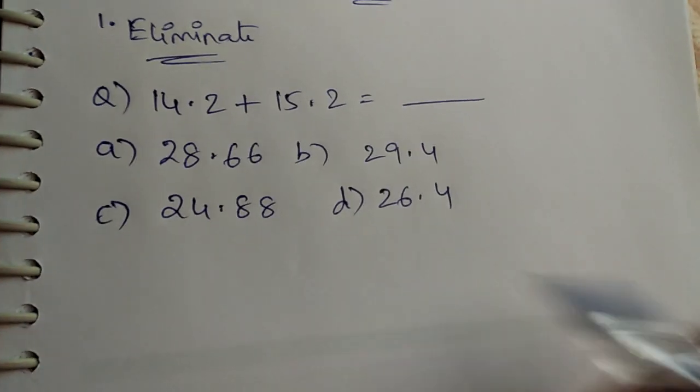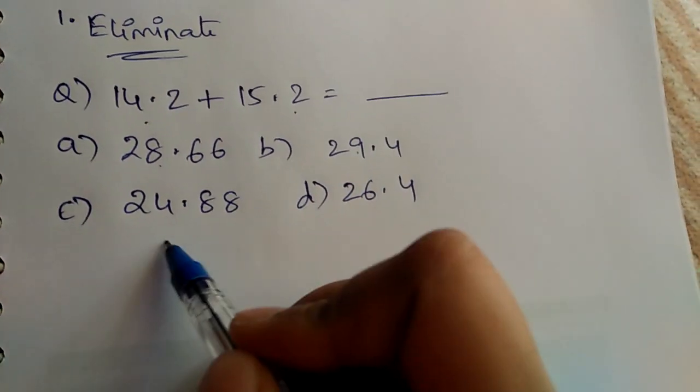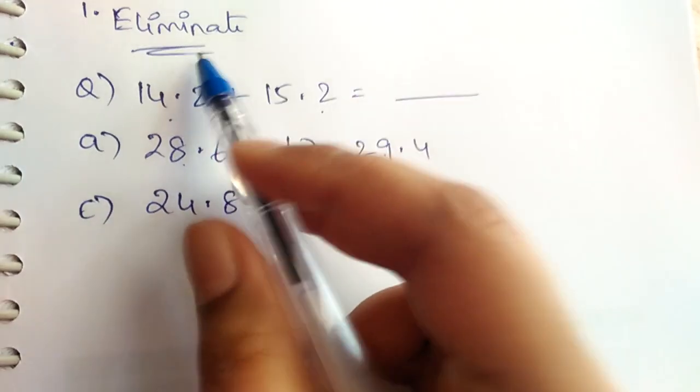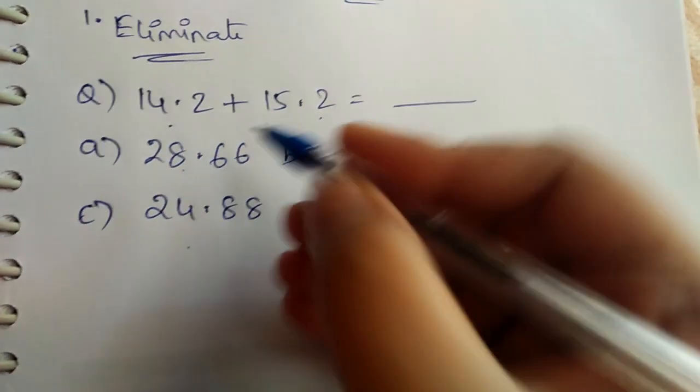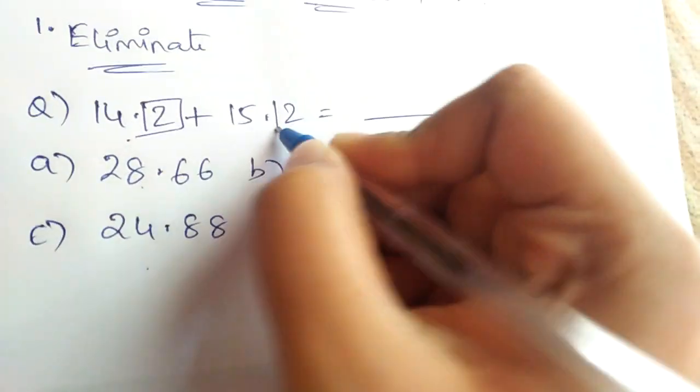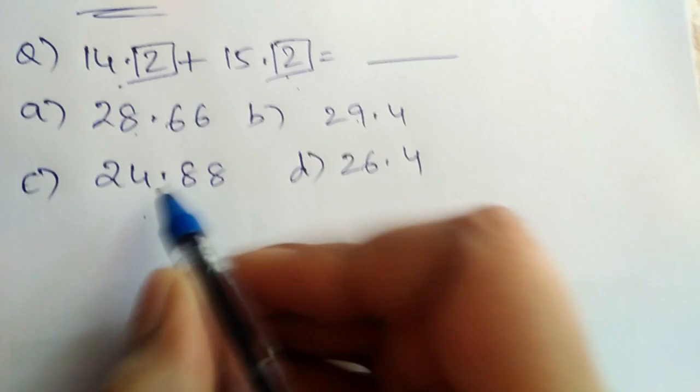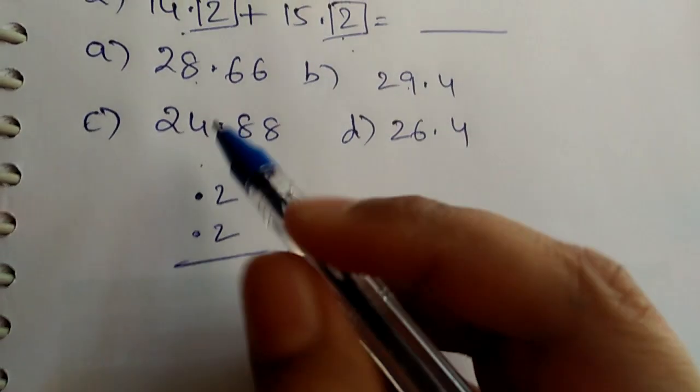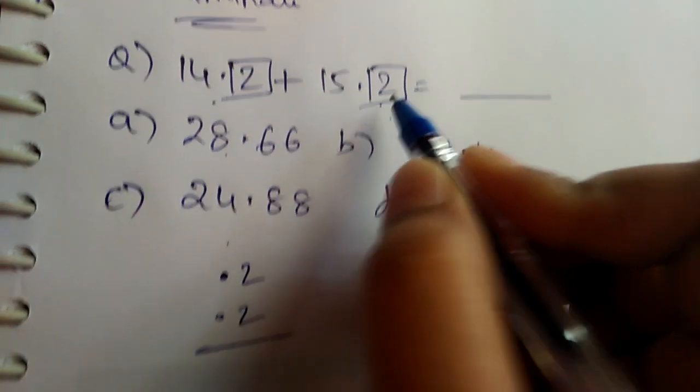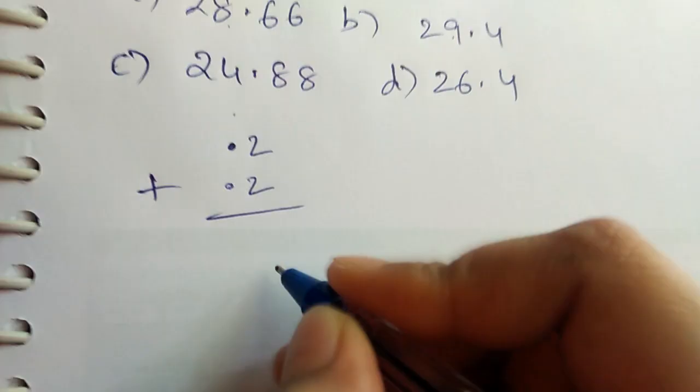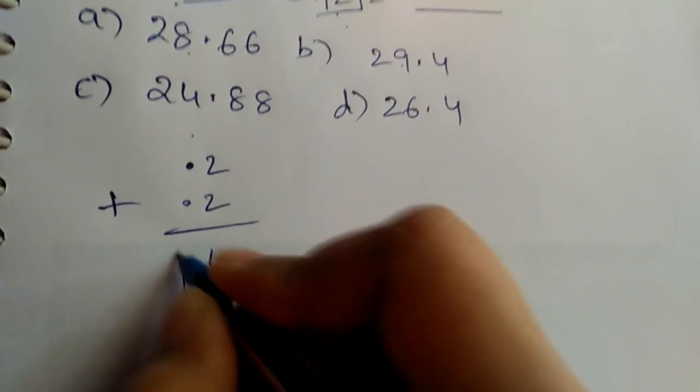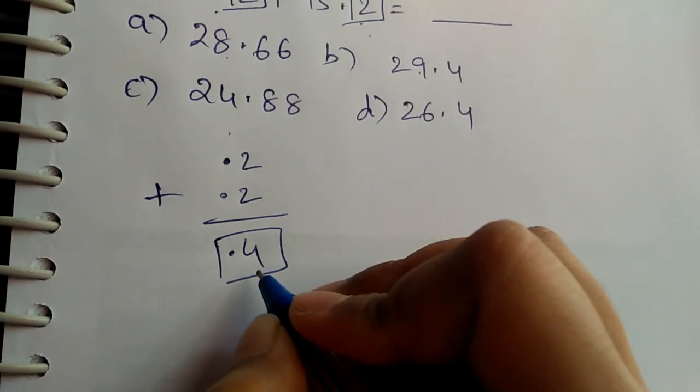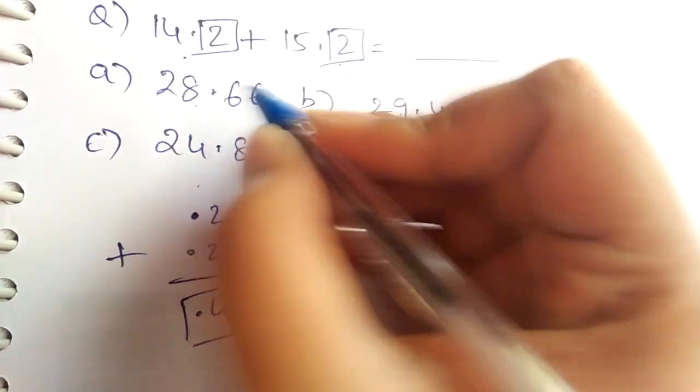How do we implement this elimination method? First, let's see the right-hand side of the decimal. We have .2, .2, .2, and .2. When we add the decimal parts, we get .4. So now we are sure that the answer's last digit will be .4.